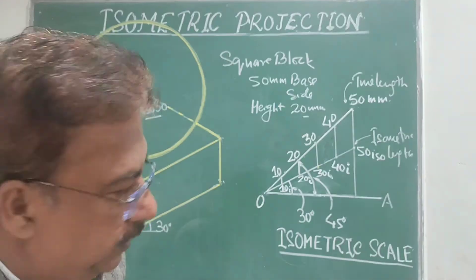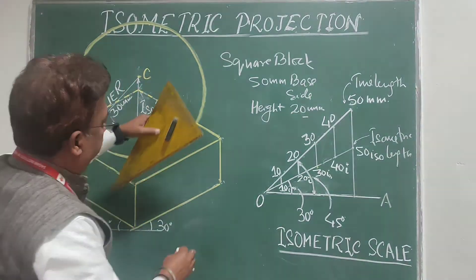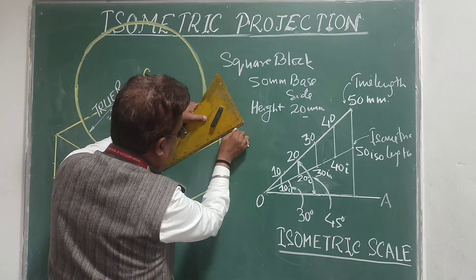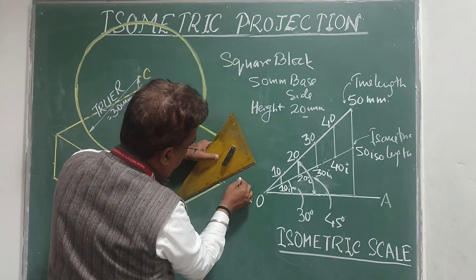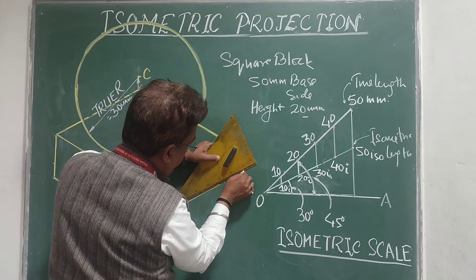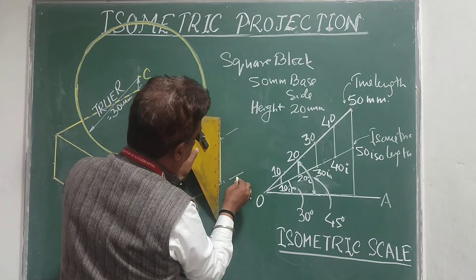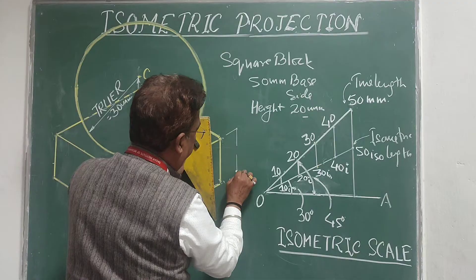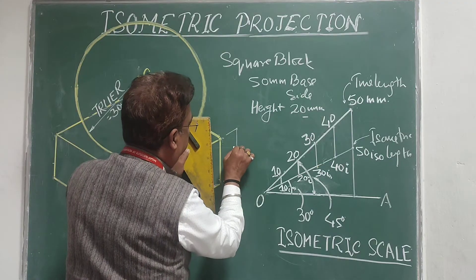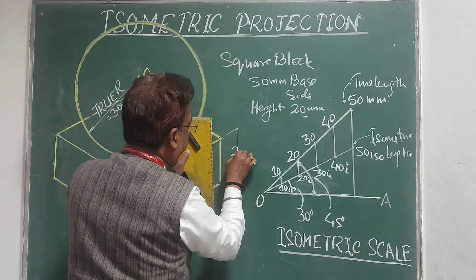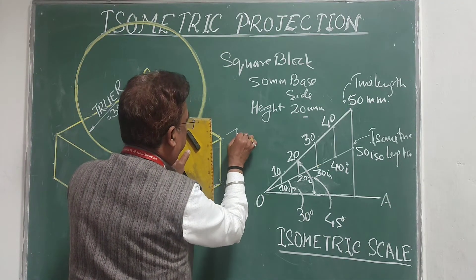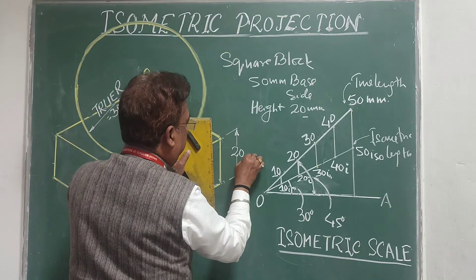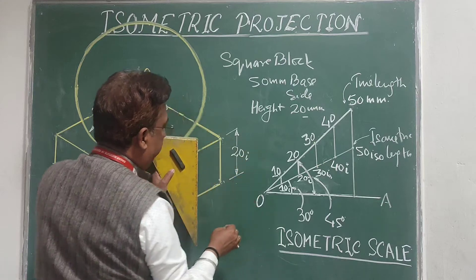For dimensioning, we dimension parallel to the isometric lines. The height of the block will be shown as 20 iso, and the sphere center offset will be shown as 25 iso.